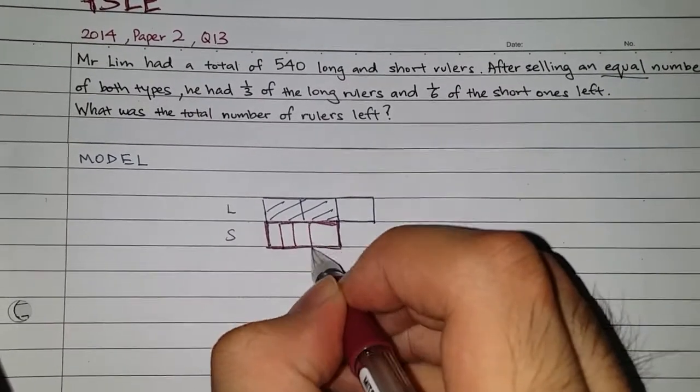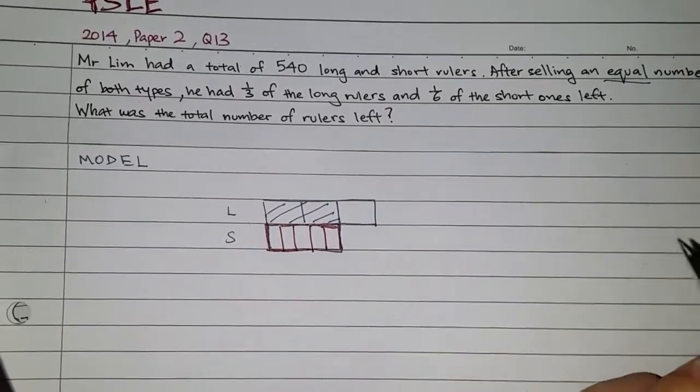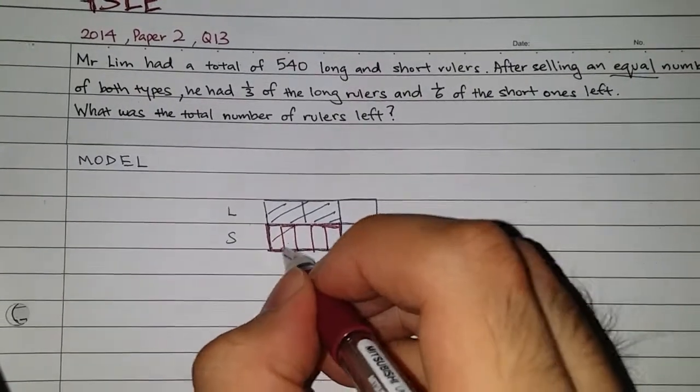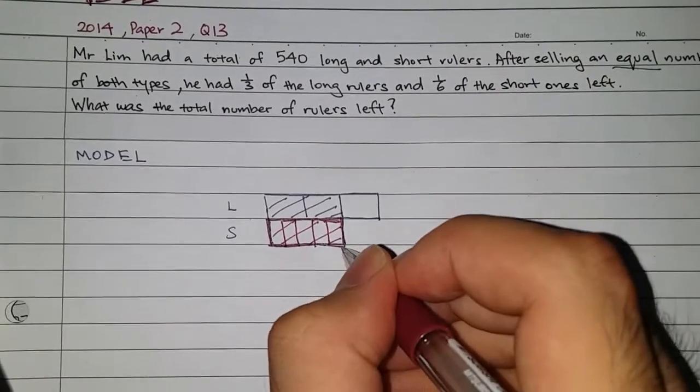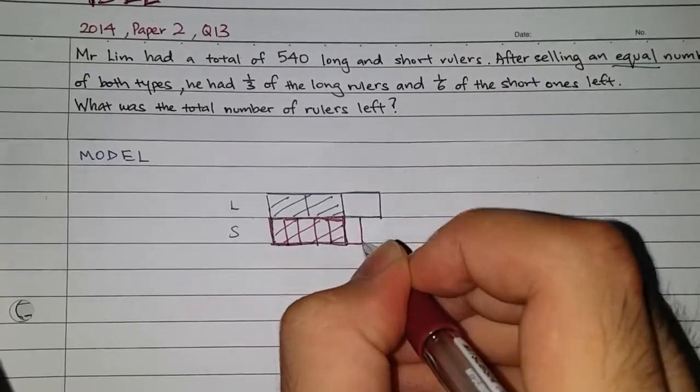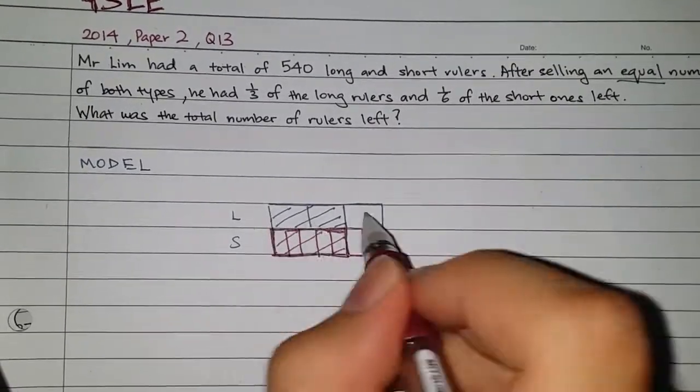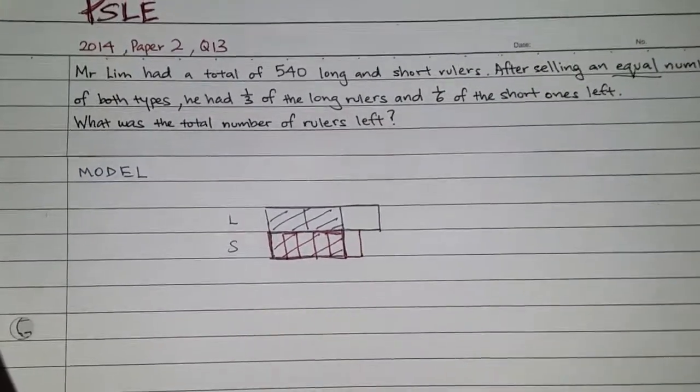Over here I need to cut into 5 because 5 units of the short one was sold. 1, 2, 3, 4, 5. And I have 5 units of sold and I need to add one more of this short units. And then now I know that actually that this long one has more than the short one.